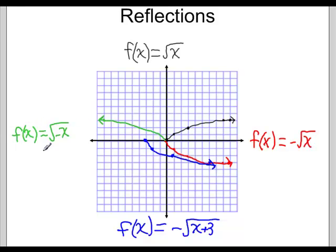Here in green, we have it flipped across the y-axis because you put a negative sign just with the x.